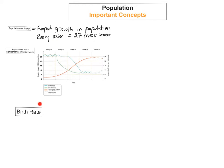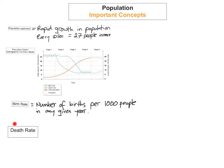The next concept we're going to look at is birth rate. Birth rate is the number of births per 1,000 people in any given year. The next concept is death rate, which is the number of deaths per 1,000 people in any given year.